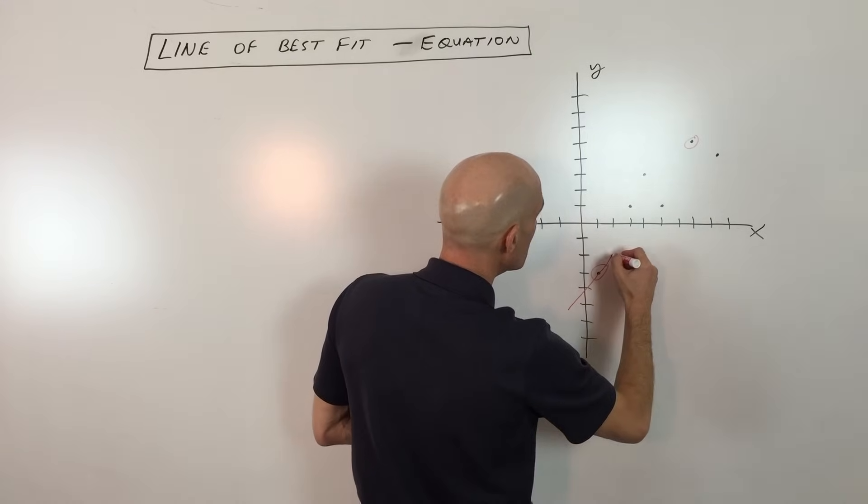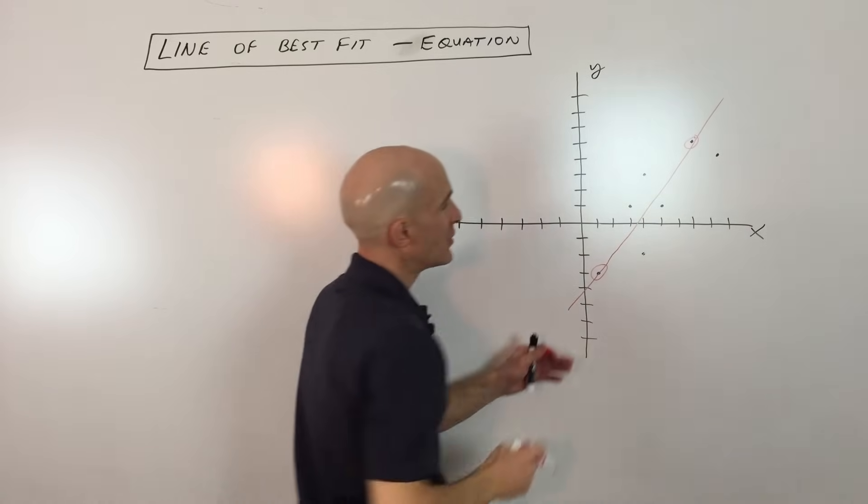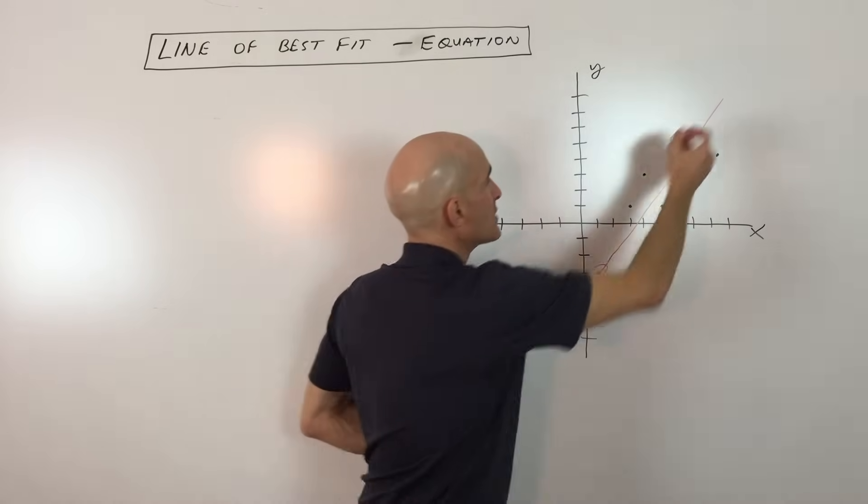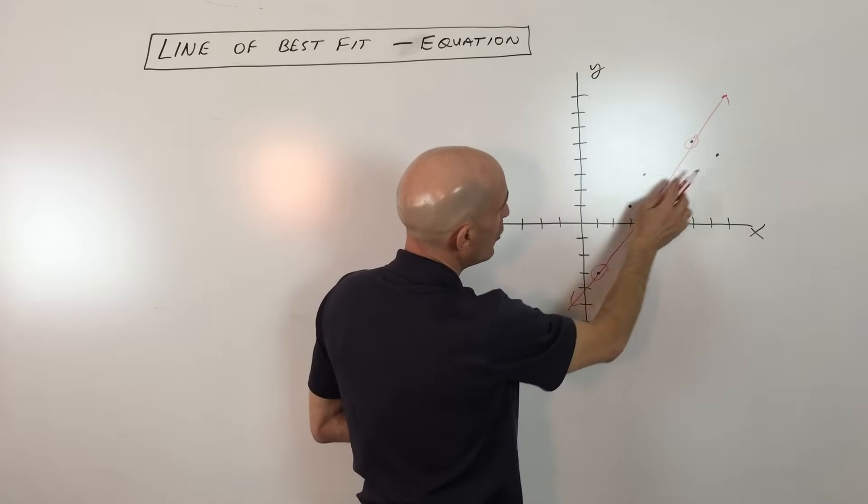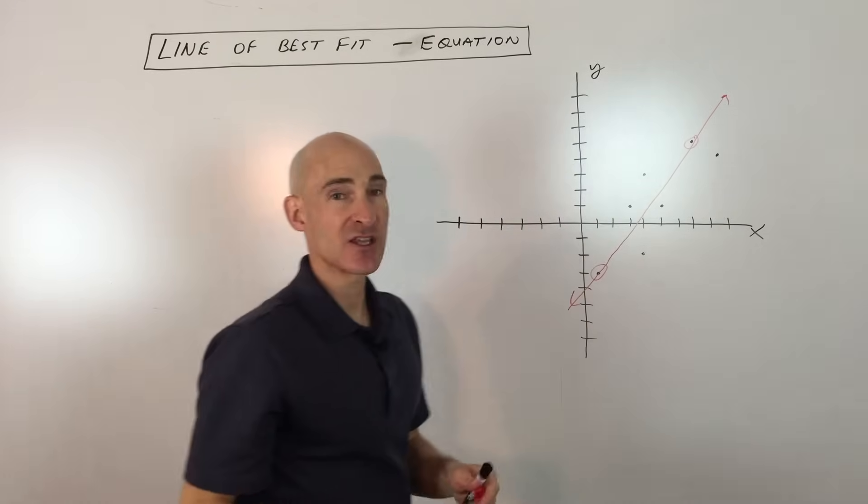Okay so if I was to draw that line I'm just going to kind of eyeball it here, I try to draw a straight line, it's just not a curve but just a line. And this looks like it's coming close to the points as possible, there's a couple below and there's a couple above.